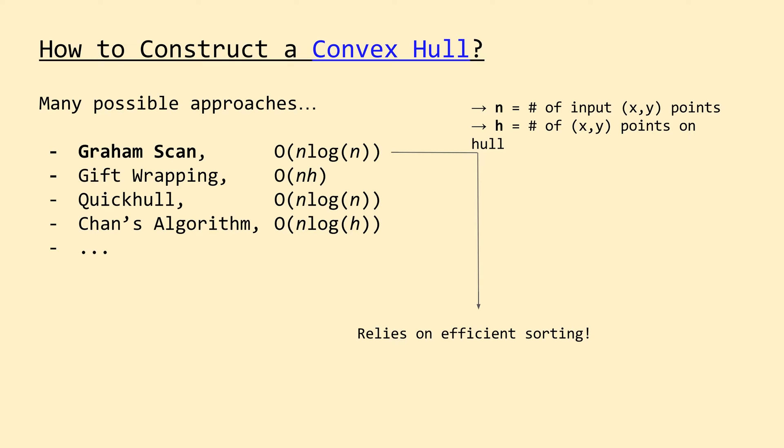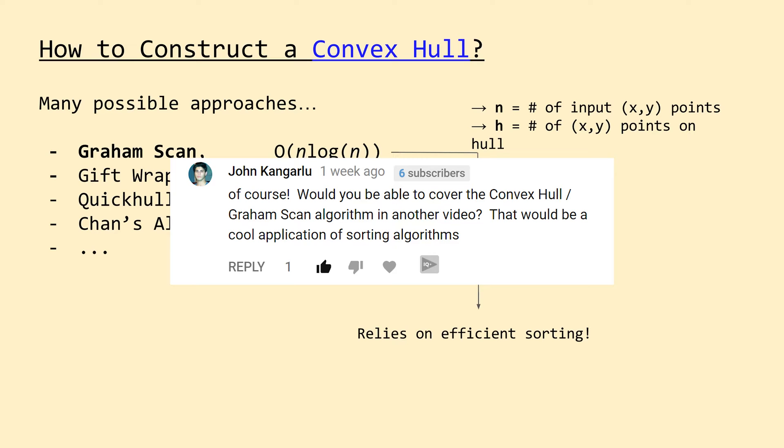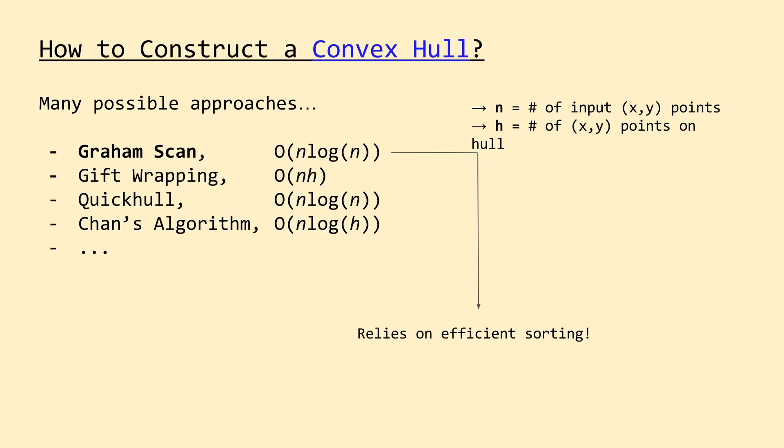Now that we've covered some background on convex hulls and how they can be used in practice, we'll move into the main topic of this video: how they can be constructed. Even though this lesson is focusing on the Graham Scan, take note that there are numerous possible approaches if you encounter a need to create convex hulls in a real-world application. On this slide we can see the average time complexities for some of the more popular approaches. When comparing convex hull algorithms, we evaluate efficiency using both the input size N as well as the output hull size H. For example, if you're working on a project where you have a large input size but know the final hull will only consist of a minimal number of data points, you may want to consider an algorithm such as CHANZ, which is sensitive to the final hull size. Graham Scan's competitive performance hinges mainly on its use of efficient sorting, and since we just finished up our sorting algorithm series, we should be able to carry over much of what we learned.